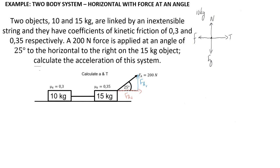For the 15 kilogram object, there is also a force of gravity acting downward and a normal force as a result of the surface. There is the applied force acting at an angle, and then two forces acting to the left — those being the tension force and, once again, the friction force.